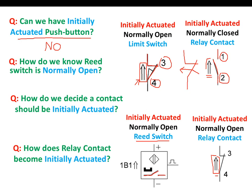How does a relay contact become initially actuated? When the relay coil is on initially — if the relay coil is on at the start, the contact will be initially actuated. This is the end of the lecture. I hope you have benefited from it and hope to see you again in the next lesson.